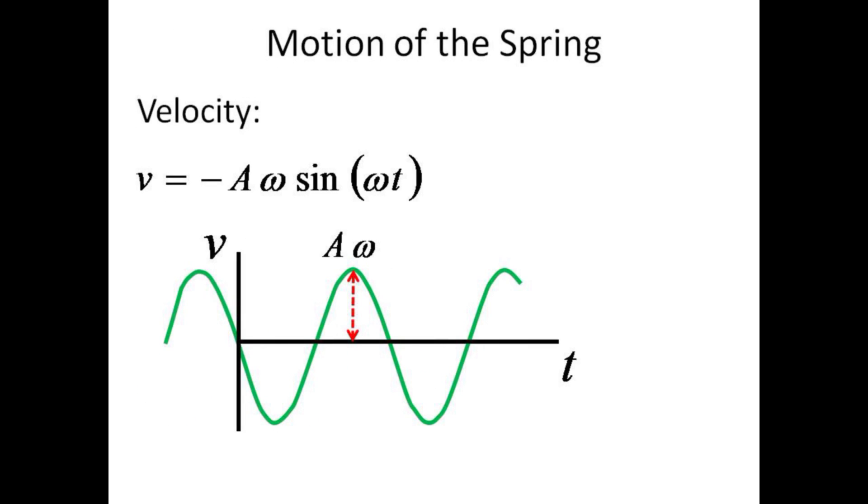The velocity at any time can be expressed as minus a times omega sine omega t. The motion begins as an inverted sine wave with a velocity amplitude of a times omega, where a was the amplitude of the original position motion.